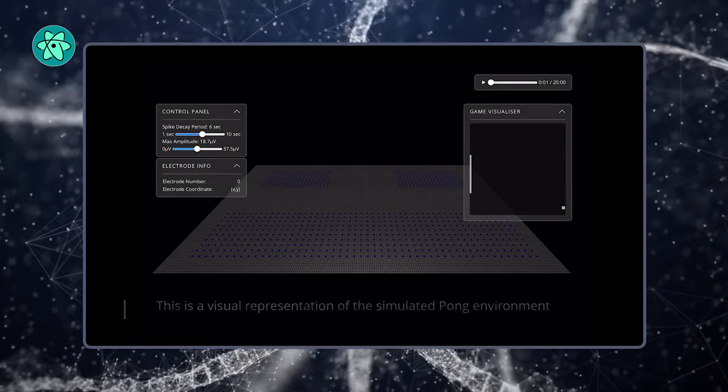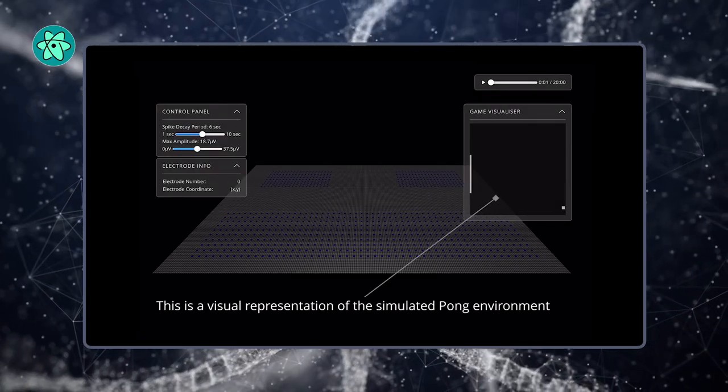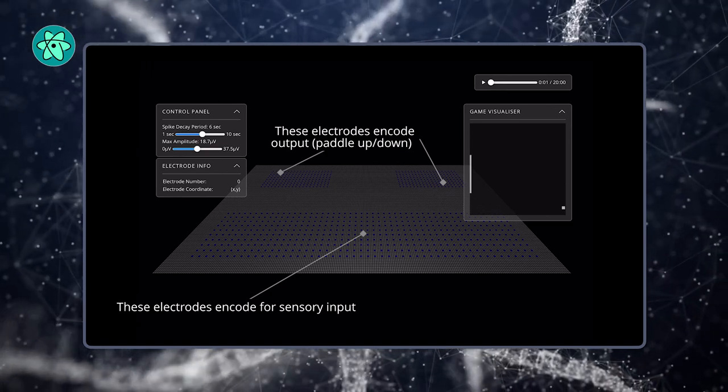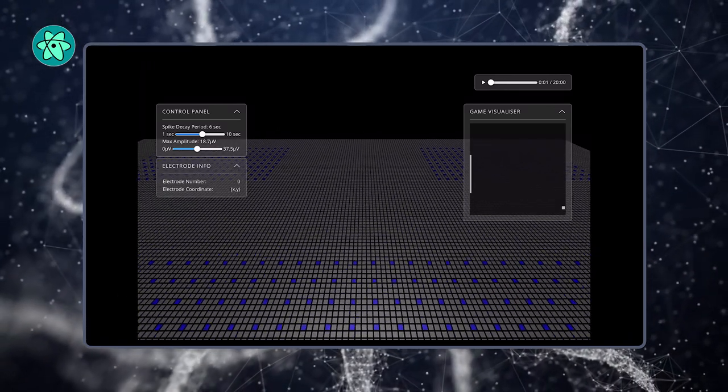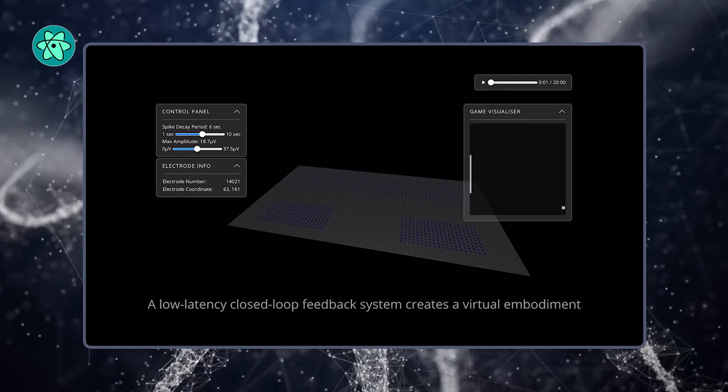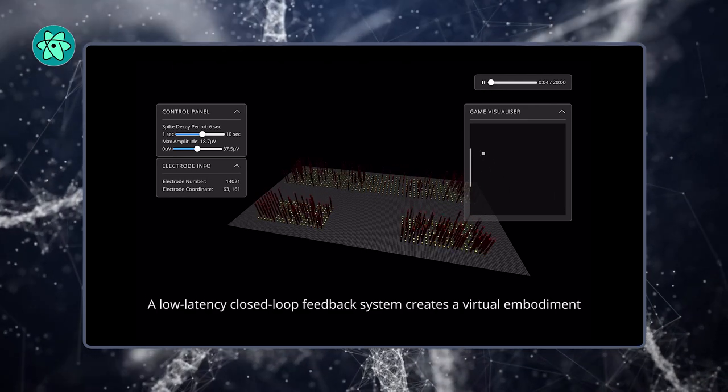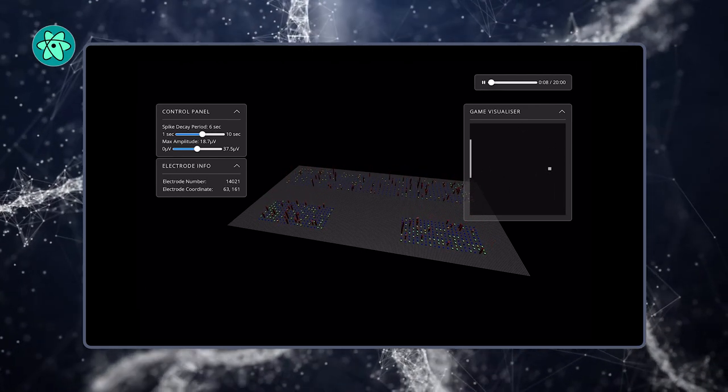Electrodes on the left or right of one array were fired to tell DishBrain which side the ball was on, while the frequency of signals indicated distance from the paddle. Feedback from the electrodes taught DishBrain how to return the ball by making the cells act as if they were the paddle themselves.